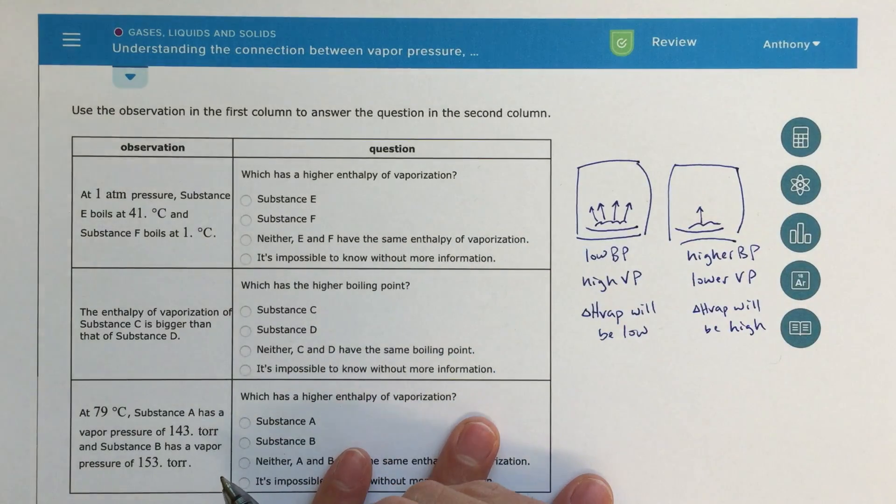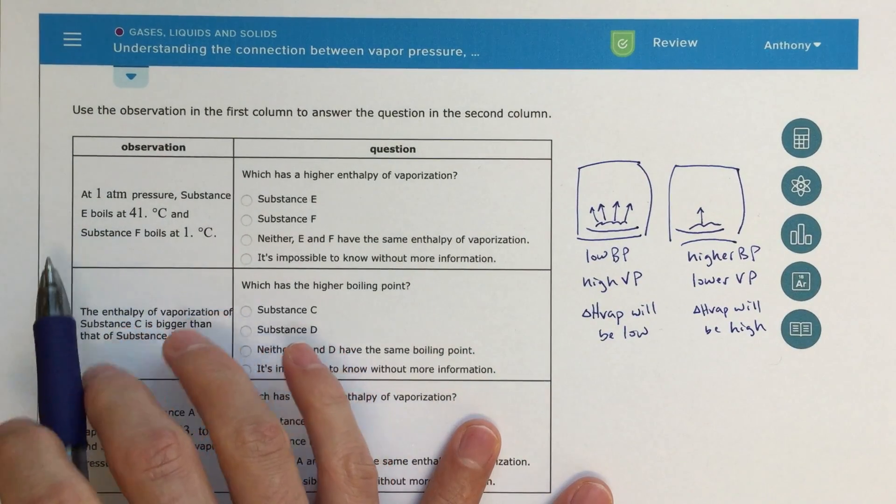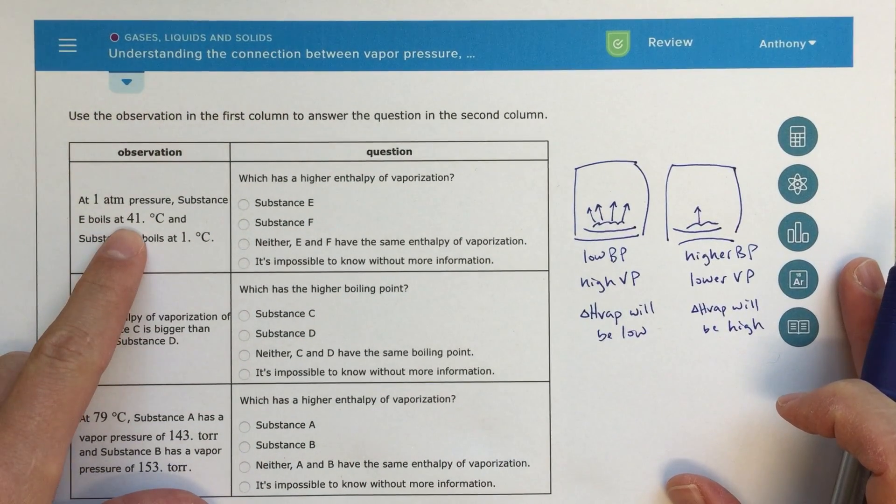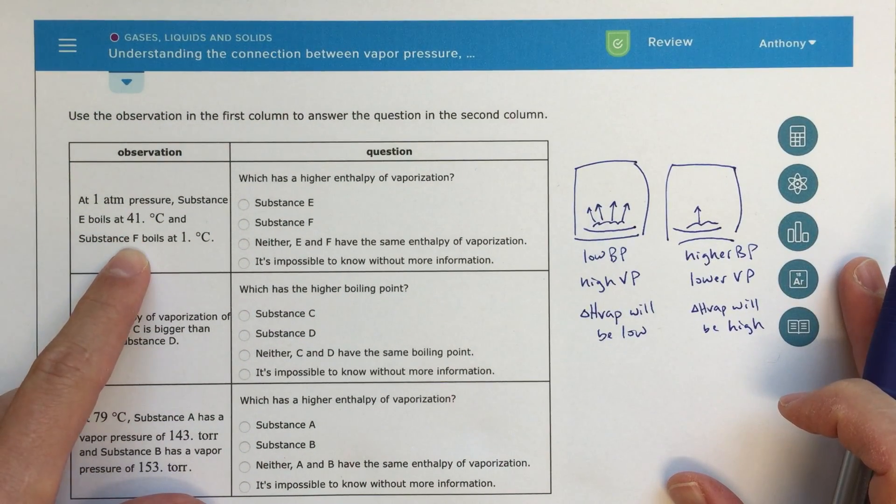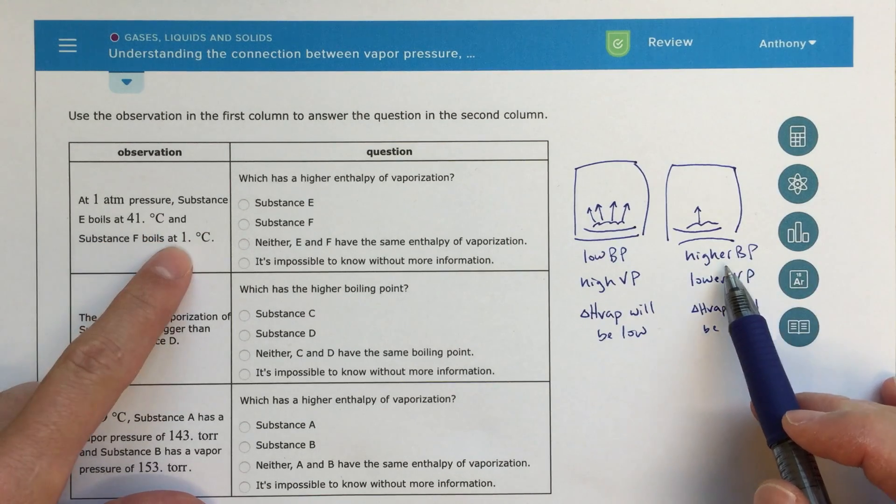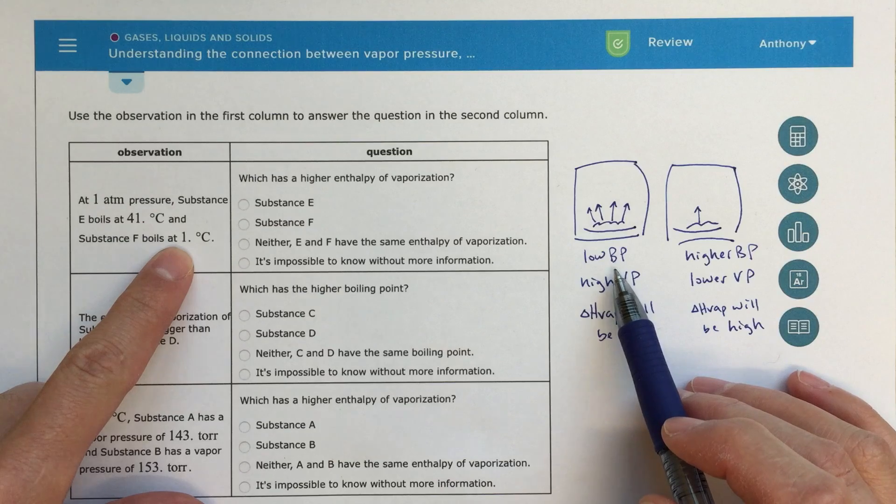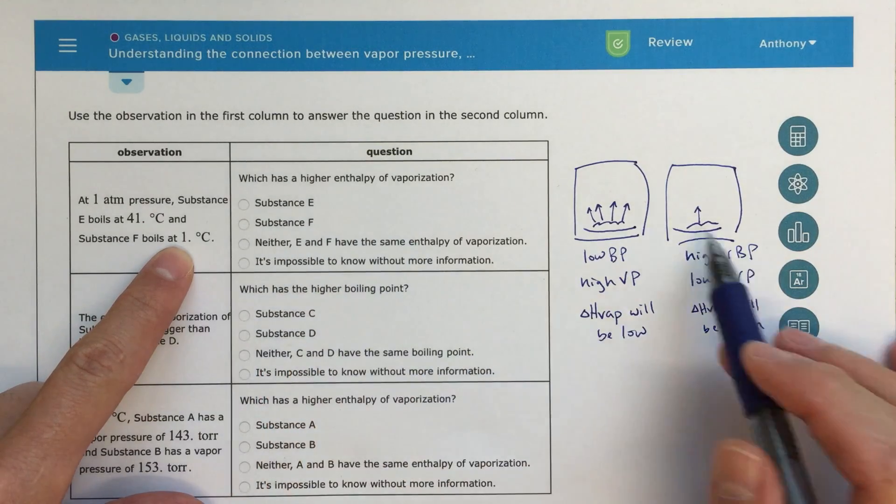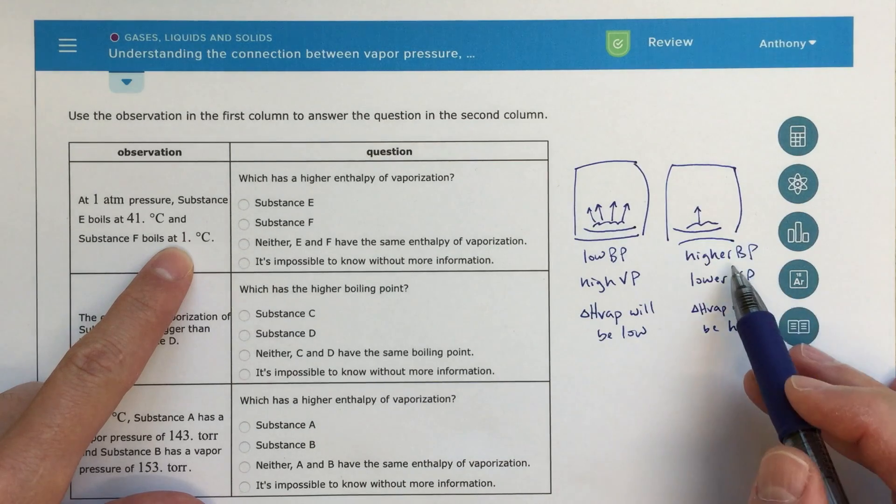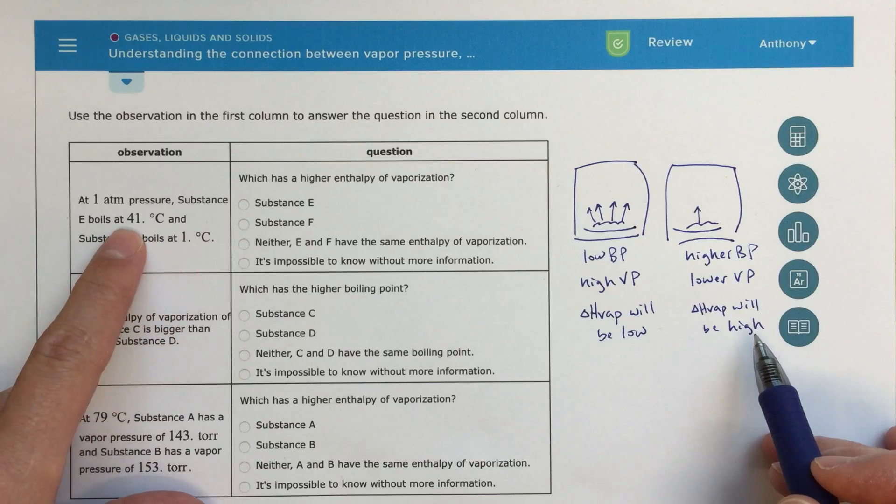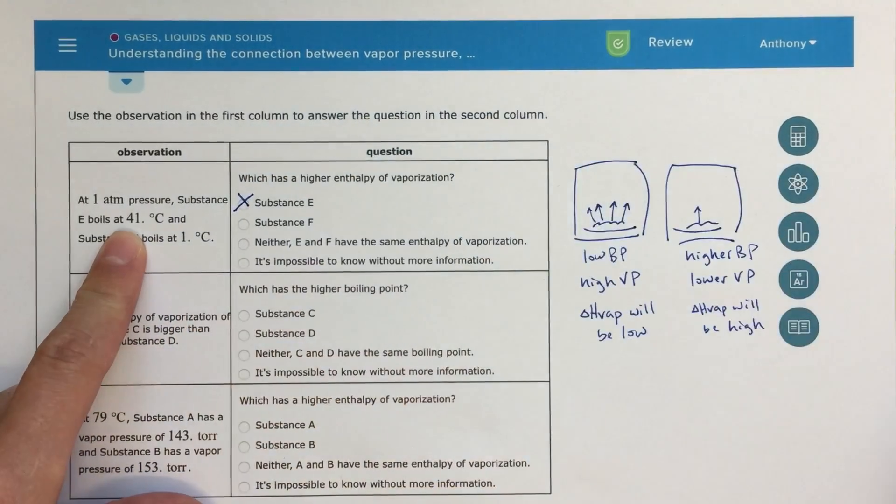So let's go ahead and answer these questions. So the first one is at one atmosphere of pressure, so we've got the same pressure. Substance E boils at 41 degrees, it's got a higher boiling point. And substance F boils at one degree Celsius. So we've got a higher boiling point for E, a lower boiling point for F. So then it says, which has the higher enthalpy of vaporization? So we could sort of just use our chart over here. Well, that one with the higher boiling point will have the higher enthalpy of vaporization. So E should be my answer here.